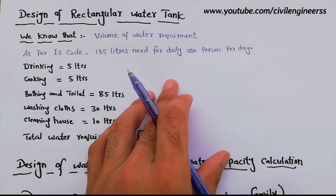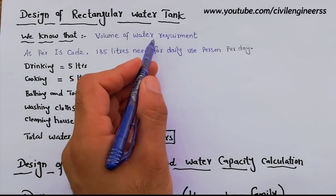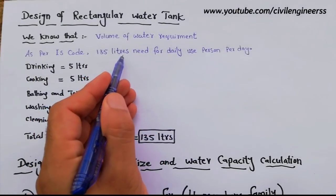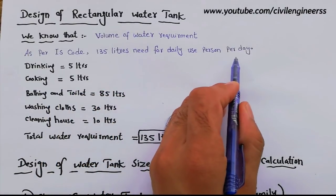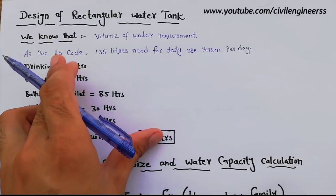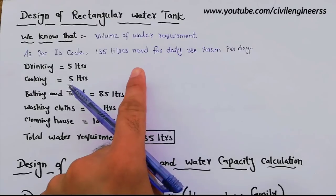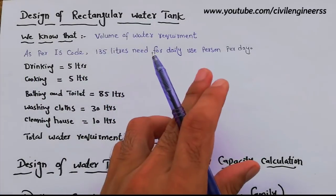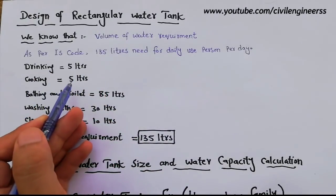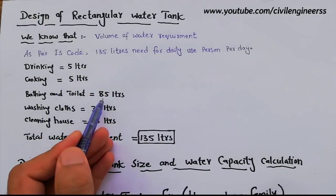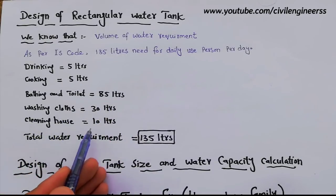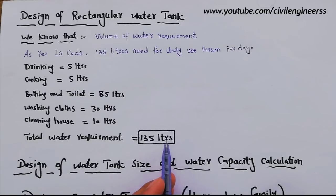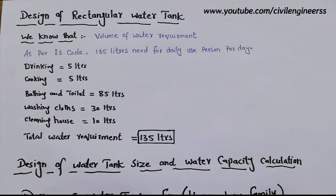As per IS code (Indian Standard code), we need 135 liters for one person per day. The breakdown is: drinking water 5 liters, cooking 5 liters, bathing and toilet 85 liters, washing clothes 30 liters, cleaning house 10 liters. Total water requirement for one person in one day is 135 liters as per IS code.